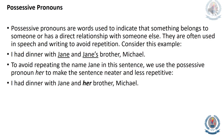Possessive pronouns are words used to indicate that something belongs to someone or has a direct relationship with someone else. They are often used in speech and writing to avoid repetition. Consider this example: I had dinner with Jane and Jane's brother Michael. To avoid repeating the name Jane, we use the possessive pronoun 'her' to make the sentence neater: I had dinner with Jane and her brother Michael.